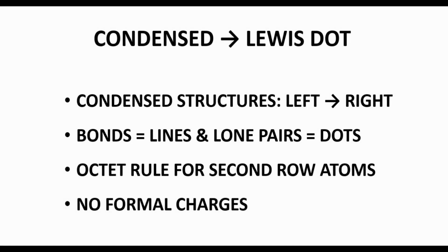Before starting the problems, let's review a few ideas. First, condensed structural formulas are read from left to right. Second, when we draw our Lewis dot structures, we will draw each bond as a line and lone pairs as two dots. Third, for the problems in this video, all second row atoms will have full octets and no formal charges.